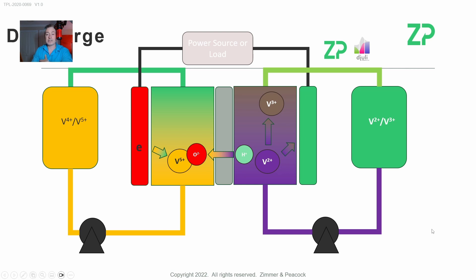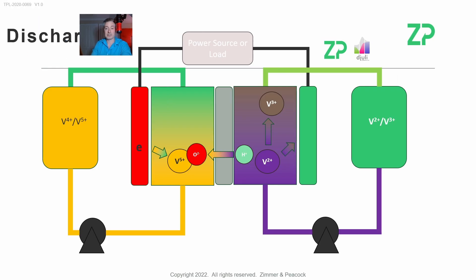membrane. The vanadium two plus that gave up that electron—and that electron went around the external path and did useful work—that loss of electron from the vanadium two plus caused us to have vanadium three plus (V3+). The vanadium five plus picked up